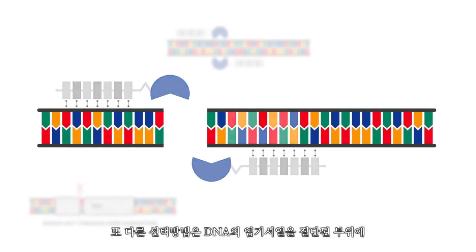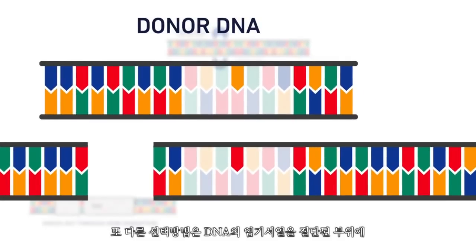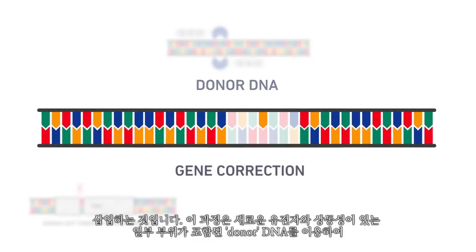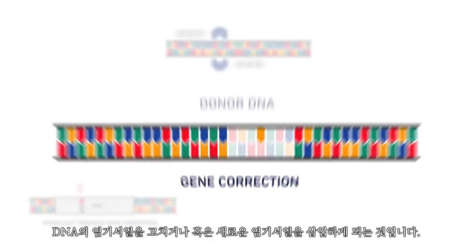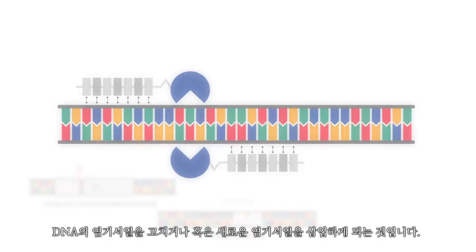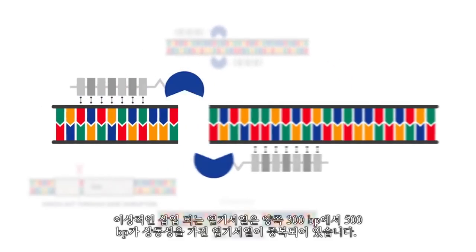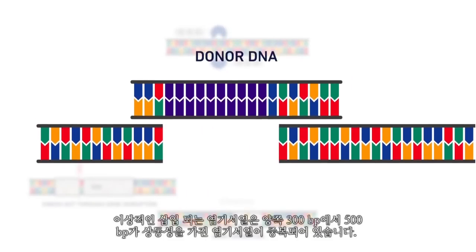Another option is to insert DNA sequences into the cut DNA. This process uses small areas of homology in the new donor DNA to correct the DNA sequence or insert new DNA sequences. Ideally, the insert sequence has overlapping homologous sequences on each side of about 300 to 500 base pairs.